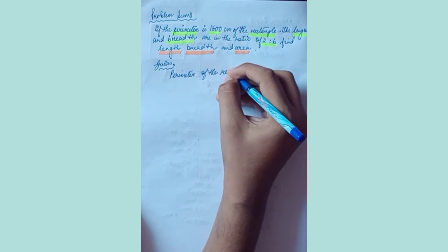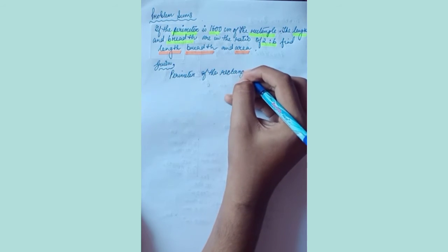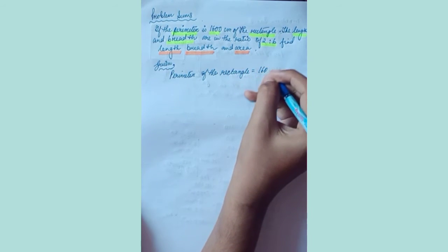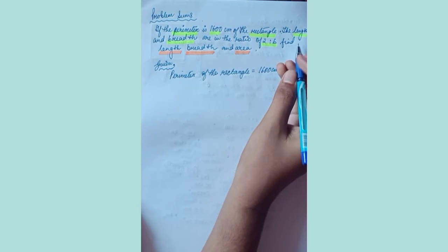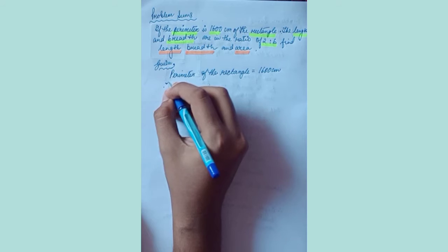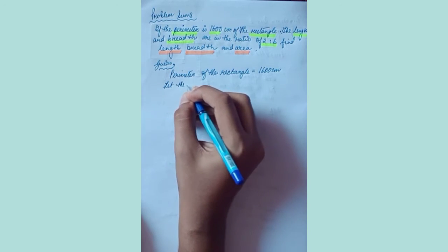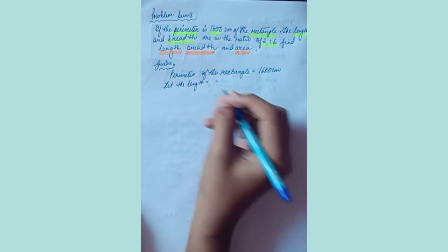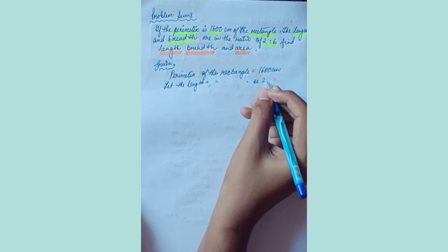So you can directly write as given: perimeter of the rectangle is 1600, equals to 1600. Then you can write length and breadth are in the ratio 2:6. Let the length of the rectangle be 2x.